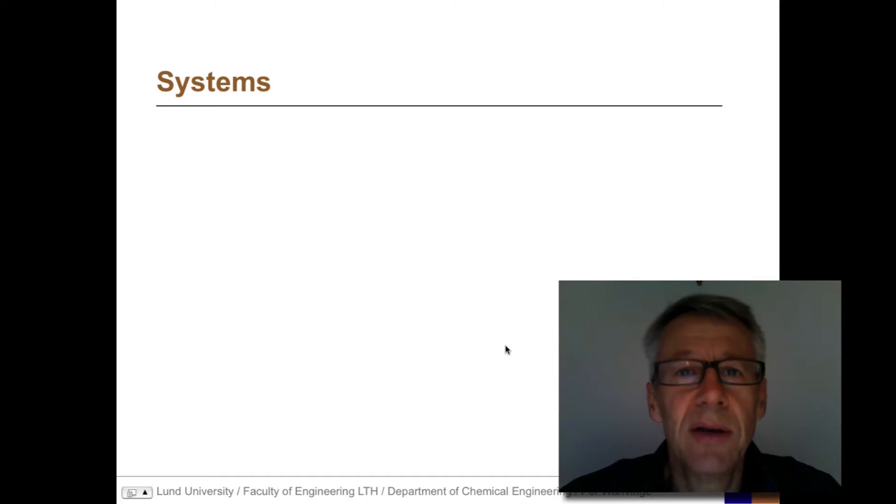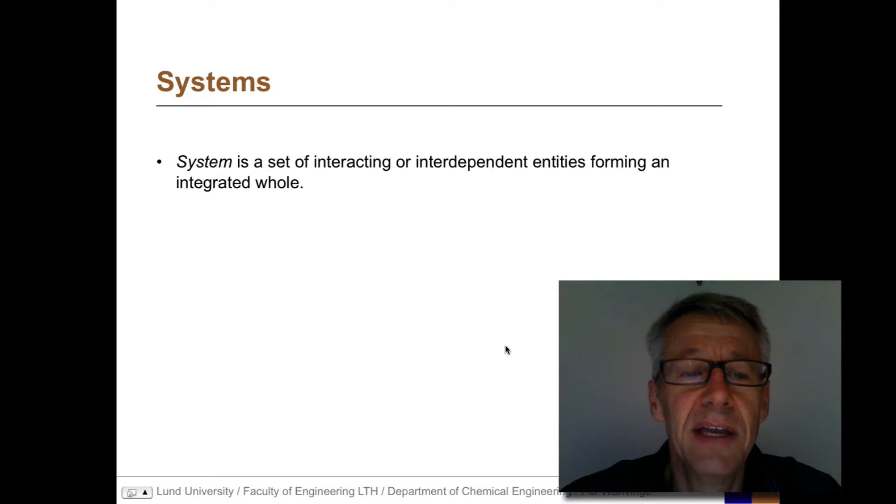Systems, that is a wide concept, yet it has a definition. A system is a set of interacting or interdependent entities forming an integrated whole. The important words here are whole, that is the system, but also the fact that it is composed of different parts that have a dependence upon each other.